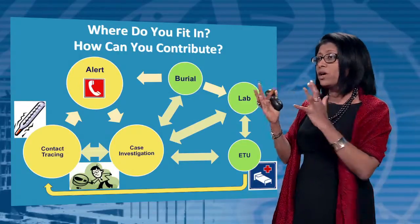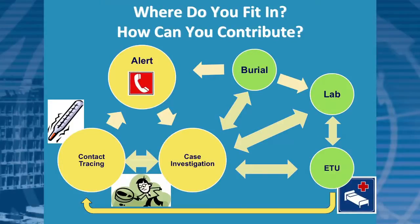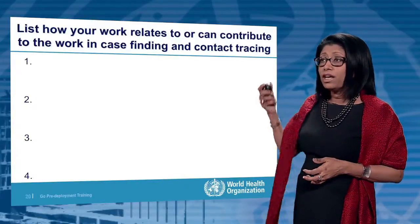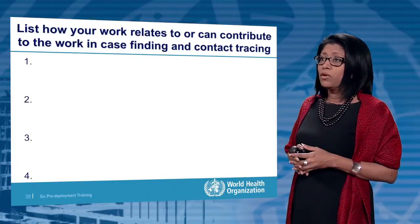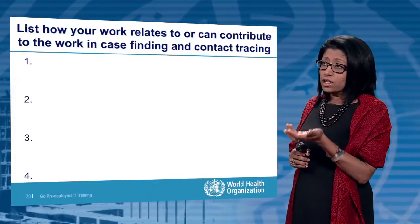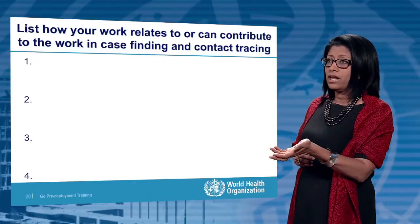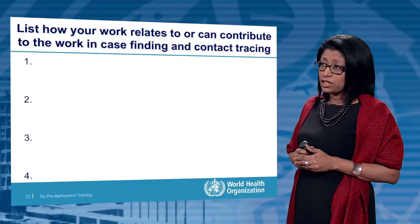To summarize this very important area of work — contact tracing and active case finding — the three areas are: alert, case investigation, and contact tracing. The model is simple: a public health worker or volunteer goes to the contact, but there are big challenges. Other areas of work — ETUs providing case management, labs providing diagnostics, and safe and dignified burials — are all interwoven with this. At the end of this module, please list how your work during your deployment can relate to or contribute to case finding and contact tracing, directly or indirectly. I hope this has been a useful session and I will see you in the next one.